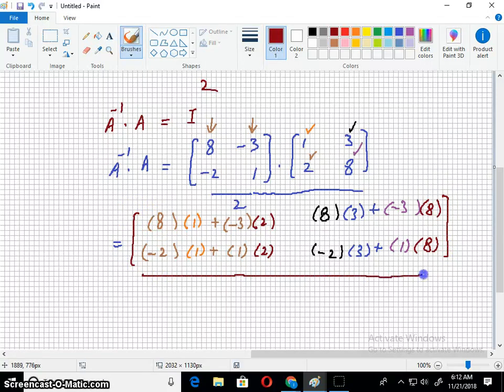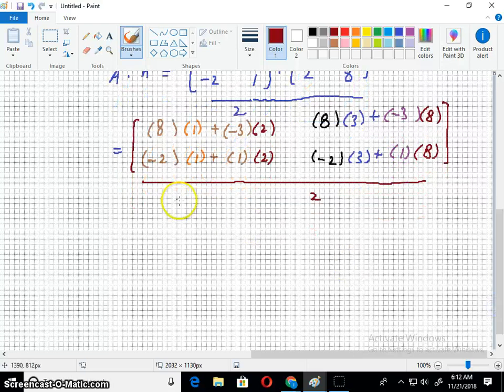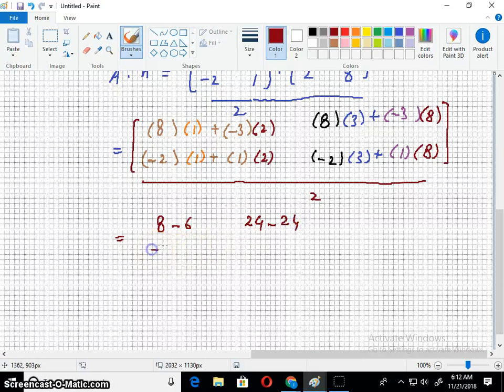And two is over. Now eight ones are eight, three twos are six, eight threes are twenty-four, three eights are twenty-four, two ones are two, two ones are two.